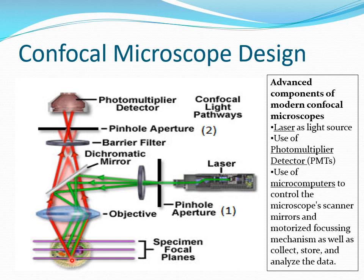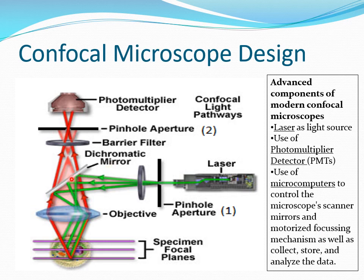The advanced key components of modern confocal microscopes are: first, use of laser as the light source; second, to detect even weak signals, a photomultiplier detector — PMTs — is used. Images taken by this are then analyzed using microcomputers. These microcomputers are also used to focus the scanners and mirrors, because images can be recorded in all three directions — X, Y, and Z — in all three dimensions using this confocal microscope.